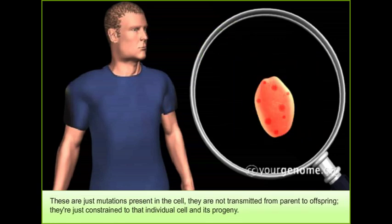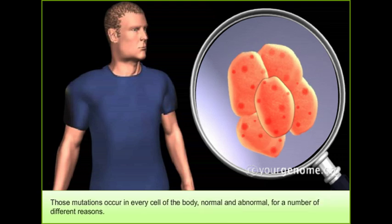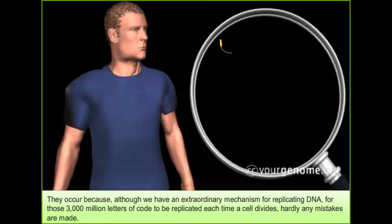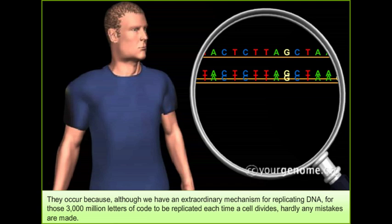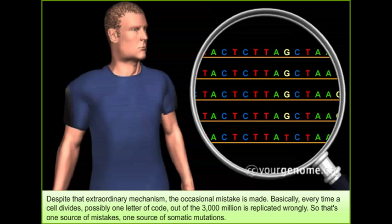These are mutations that are just present in the cell. They're not transmitted from parents to offspring. They're just constrained to that individual cell and its progeny. And those mutations occur in every cell of the body, normal and abnormal, for a number of different reasons. They occur because, although we have an extraordinary mechanism for replicating DNA — for those 3,000 million letters of code to be replicated each time a cell divides — hardly any mistakes are made. Despite that extraordinary mechanism, the occasional mistake is made. Basically, every time a cell divides, possibly one letter of code out of the 3,000 million is replicated wrongly. So that's one source of somatic mutations.